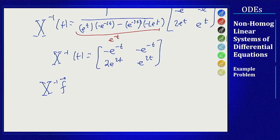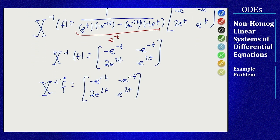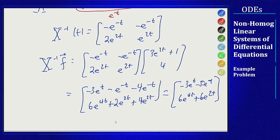So now I want to do x inverse times f, which is going to be that same matrix times the non-homogeneous part of my equation, which was 3 e to the 2t plus 1 and 4, and I can compute this out. Which gives me this vector here, negative 3 e to the t minus 5 e to the minus t, 6 e to the 4t plus 6 e to the 2t.